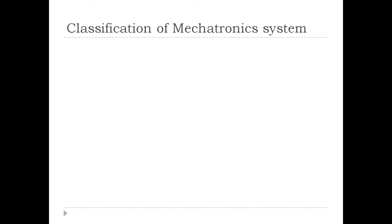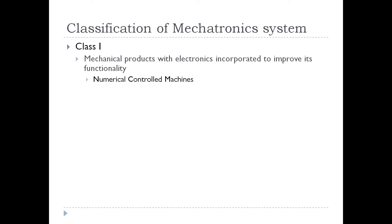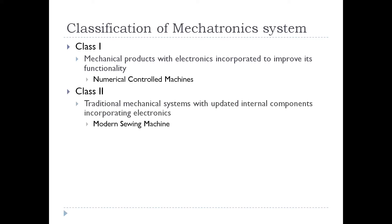Classification of mechatronics systems: mechatronics products were initially classified by JSPMI — the Japanese Society for the Promotion of Machine Industry — into four classes. Class one is a basic mechanical product with a little amount of electronics incorporated into it; the best example is a numerically controlled machine. Class two consists of traditional mechatronics systems with more electronics integrated, such as a modern sewing machine.